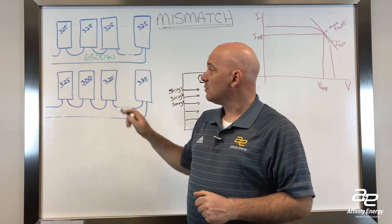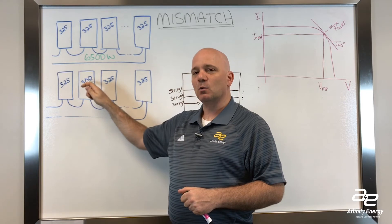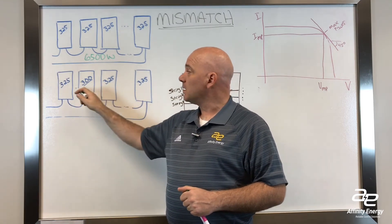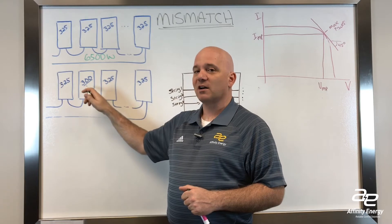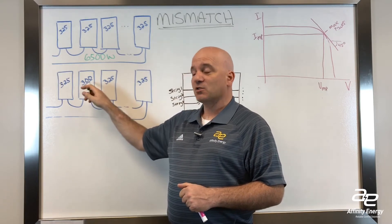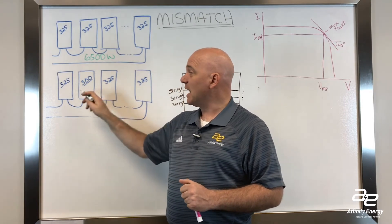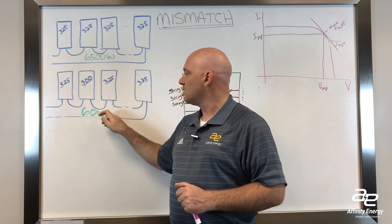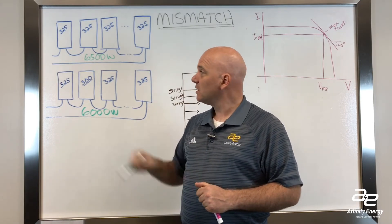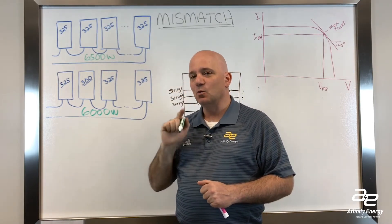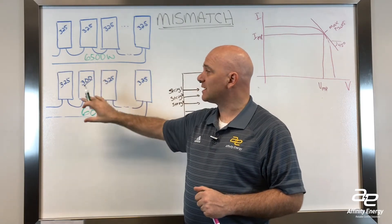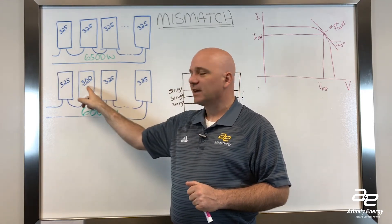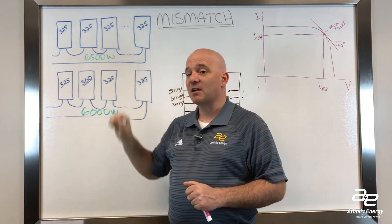Module mismatch means that if somewhere in here we've mixed in a 300-watt module instead of a 325-watt module, the difference is not just a 25-watt loss in power. That 300-watt module actually brings all the other modules down to its level, and now we've got 20 modules at 300 watts, or 6,000 watts — a 500-watt loss, even though there's only a 25-watt difference in one module in the string. So it's very important to keep modules of the same bin class together in strings, because one little tiny error is going to have a significant impact on the amount of power that comes out.